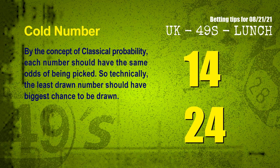In the end of this video, we have two more tips for you: cold numbers and overdue numbers. By the concept of classical probability, each number should have the same odds of being picked, so technically the least drawn number should have the biggest chance to be drawn. We count thousands of results before — the coldest two numbers for next draw will be 14 and 24.